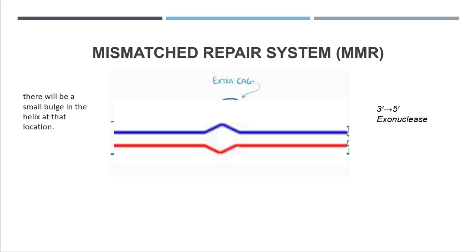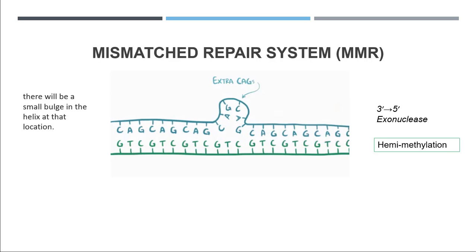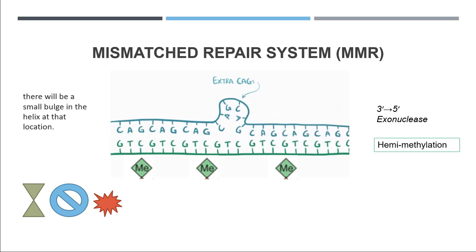After replication it's really difficult to remember which strand was the parental DNA and which is the newly synthesized strand — which strand has the problem. To detect that, we have a process called hemimethylation. Hemimethylation means that the parental DNA has a methyl group added to it, while the newly synthesized DNA does not. The repair proteins detect the methylation on the parental DNA and recognize which strand needs repair.